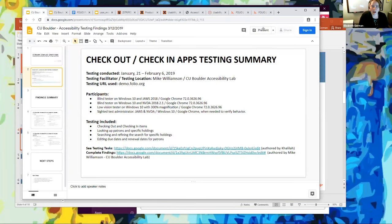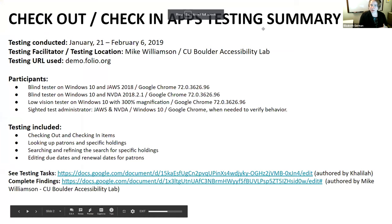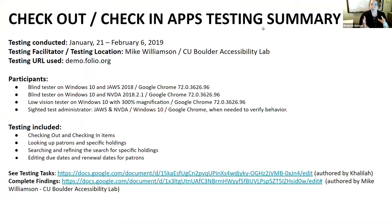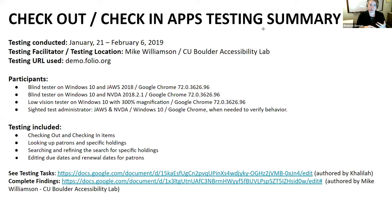We get a report, and Talia is very helpful in putting it all together in a presentable way so we can process what we've learned. At the accessibility lab, they use participants who are quite familiar with assistive technology. For this particular test at the beginning of the year, they had a blind tester using JAWS, a blind tester using NVDA — both screen reader technologies — a low vision tester with magnification, and a sighted test administrator using JAWS and NVDA. This particular test was looking at checking out and checking in items, looking at patrons and specific holdings, searching and refining search results, and editing due dates.